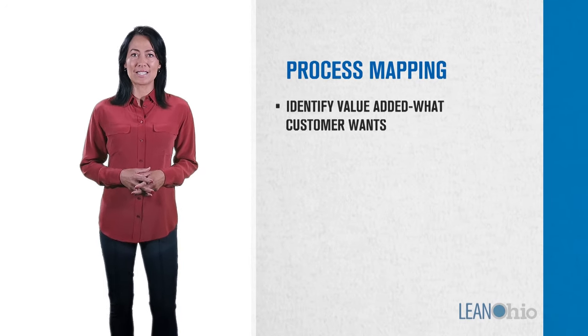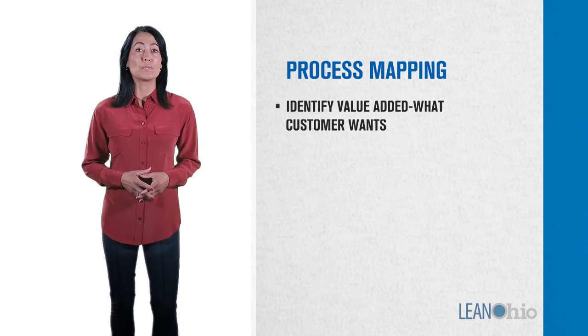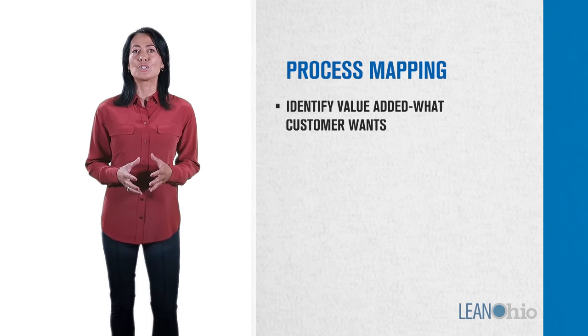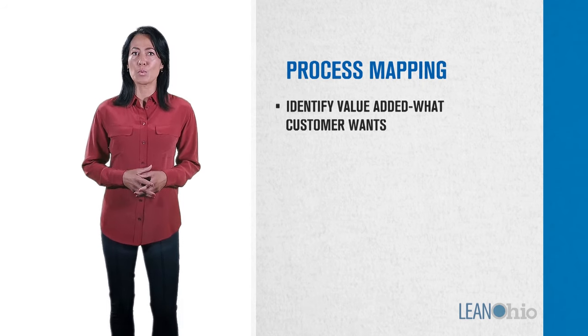Once the process map is drawn it's time to analyze it for potential areas of process improvement. Begin by identifying value-added activities, those that transform materials and information into products or services that the customer wants.